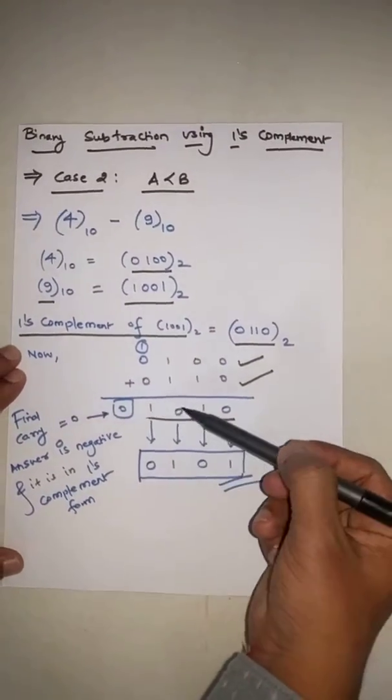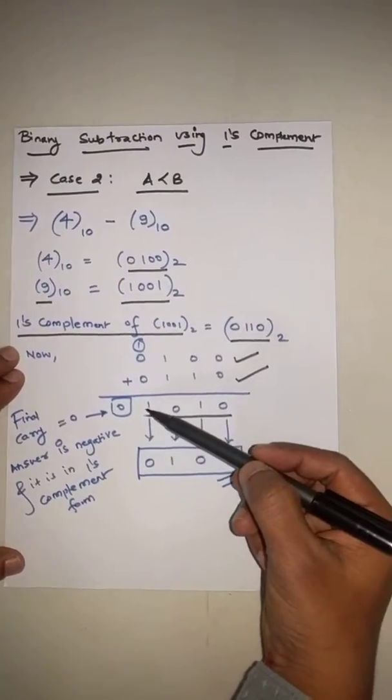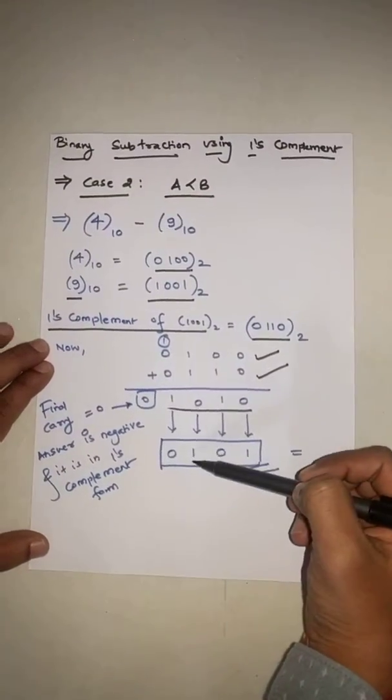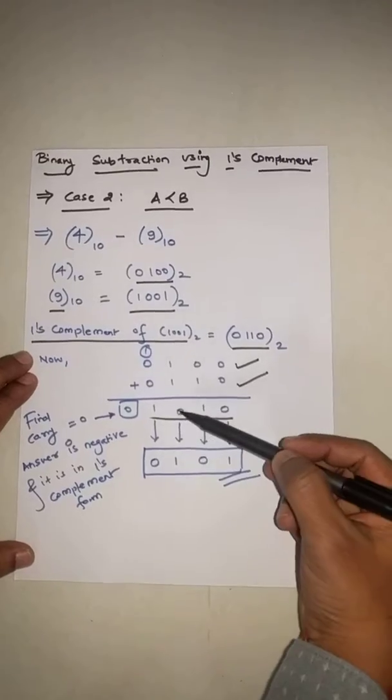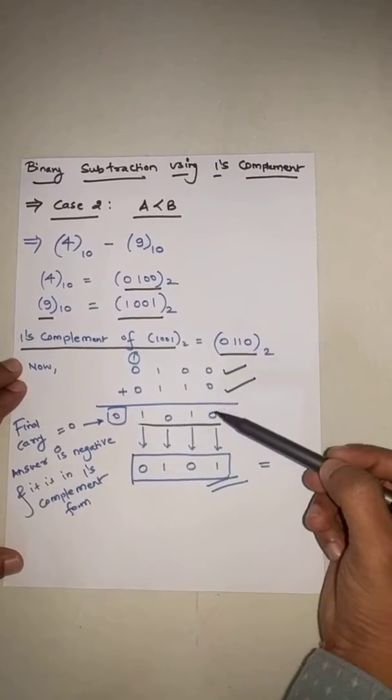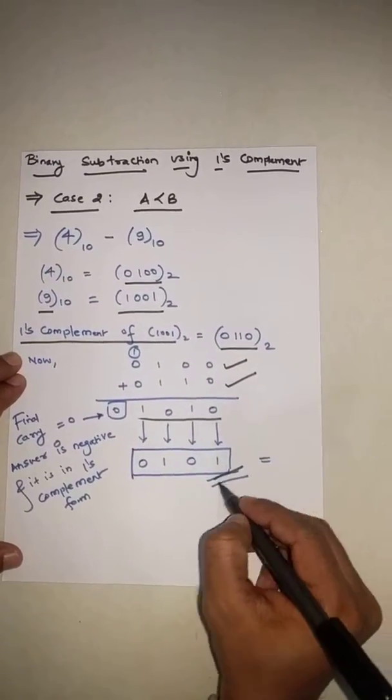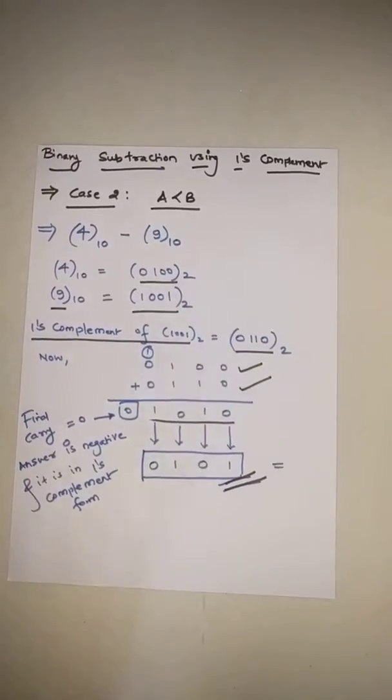We have to convert each and every bit, that is 1 to 0 or 0 to 1. So it is like 1 becomes 0, 0 becomes 1, 1 becomes 0, and 0 becomes 1. At the end, the final answer is 0101. Thank you.